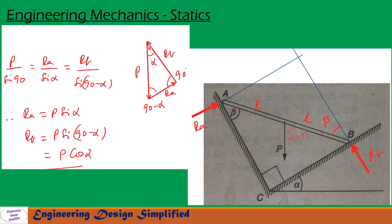So then angle between P and RB will be alpha, and angle between RB and RA will be 90 degrees. Since you can see here, this is 90 degrees. So if this is alpha, this is 90 degrees, then this angle will become 90 minus alpha.